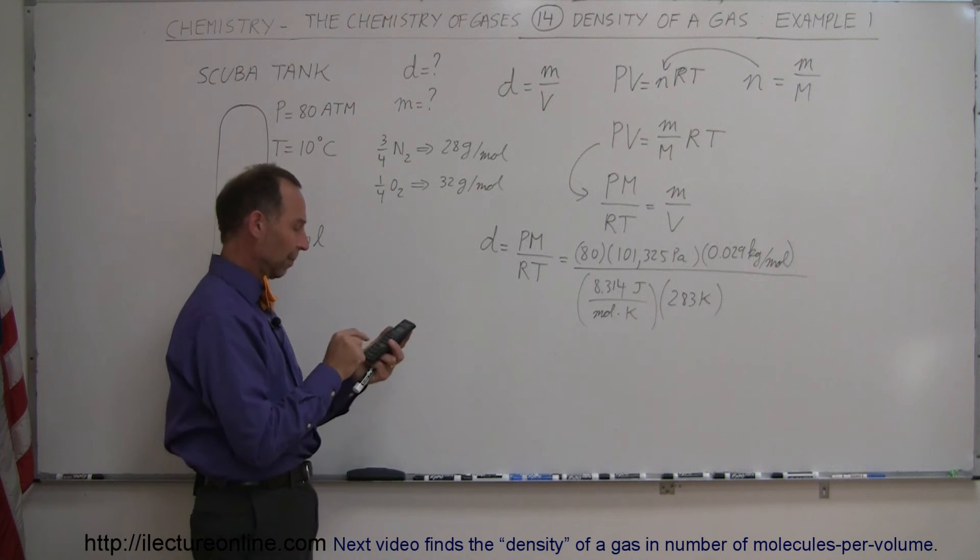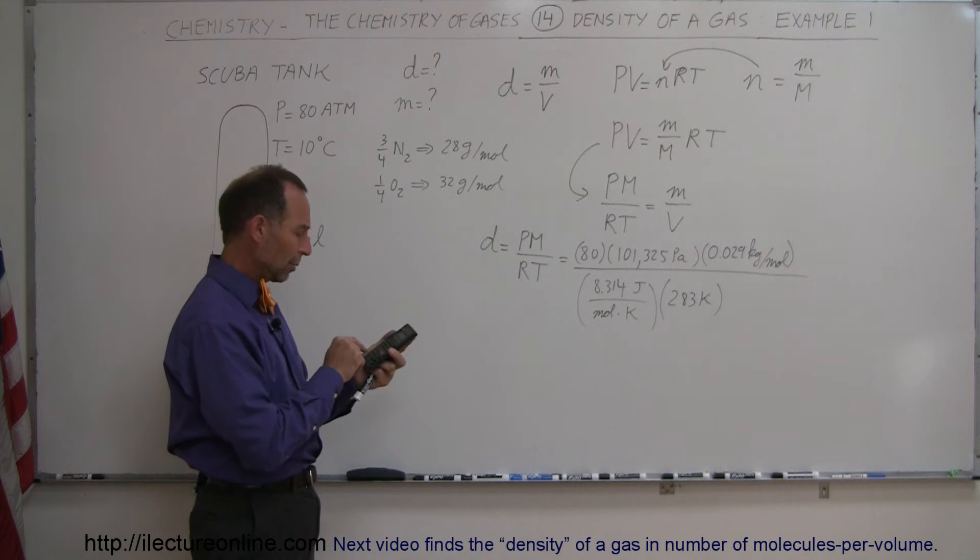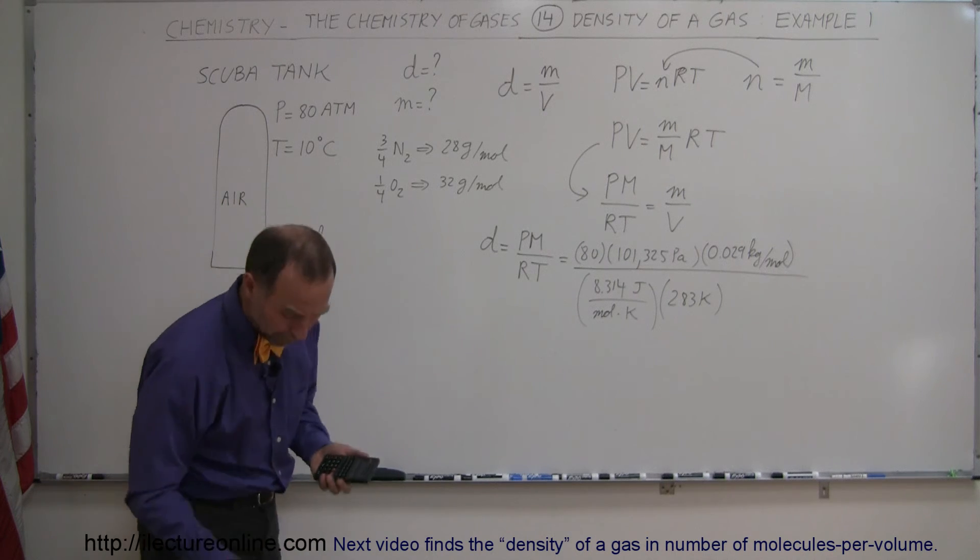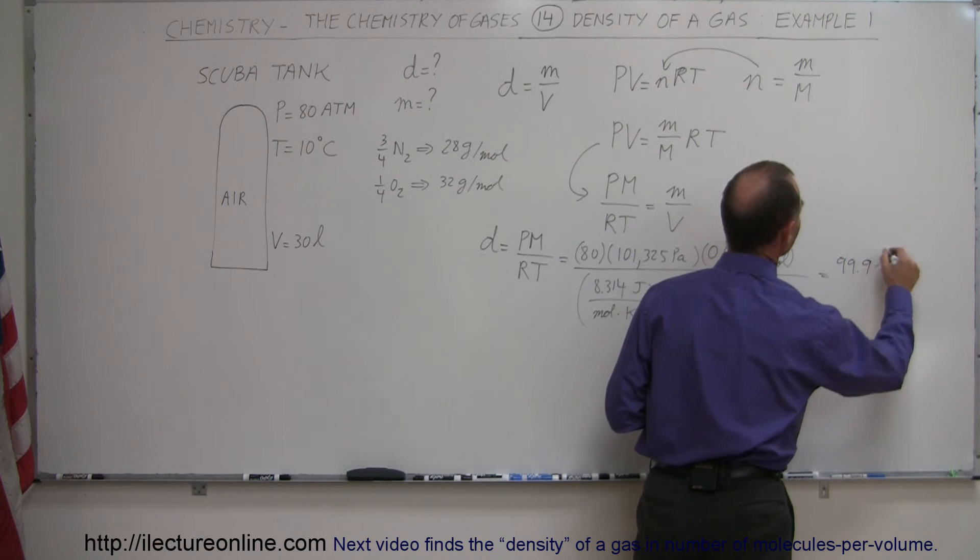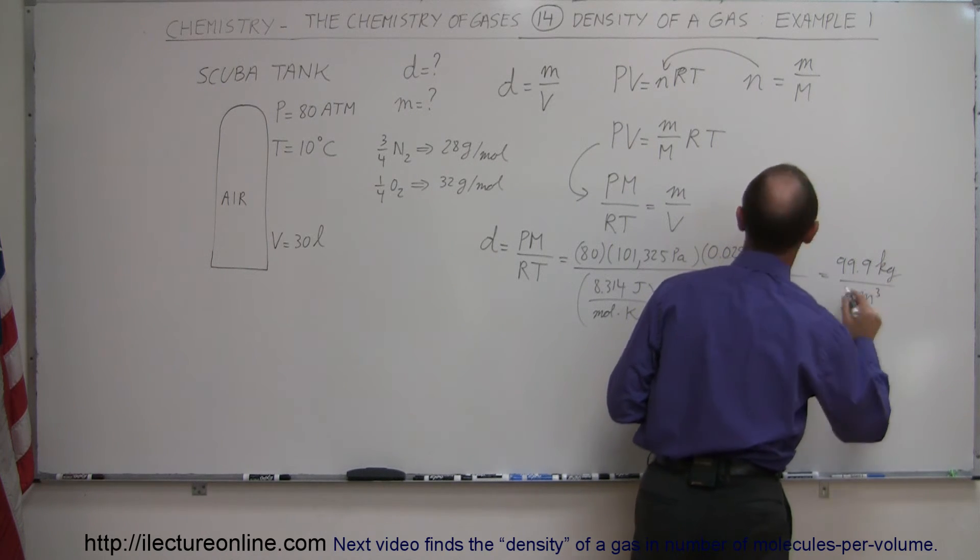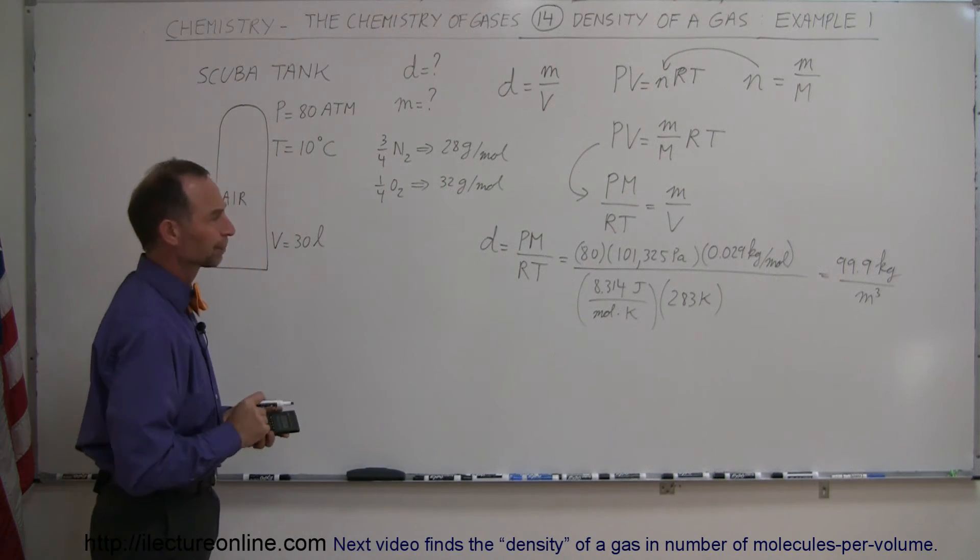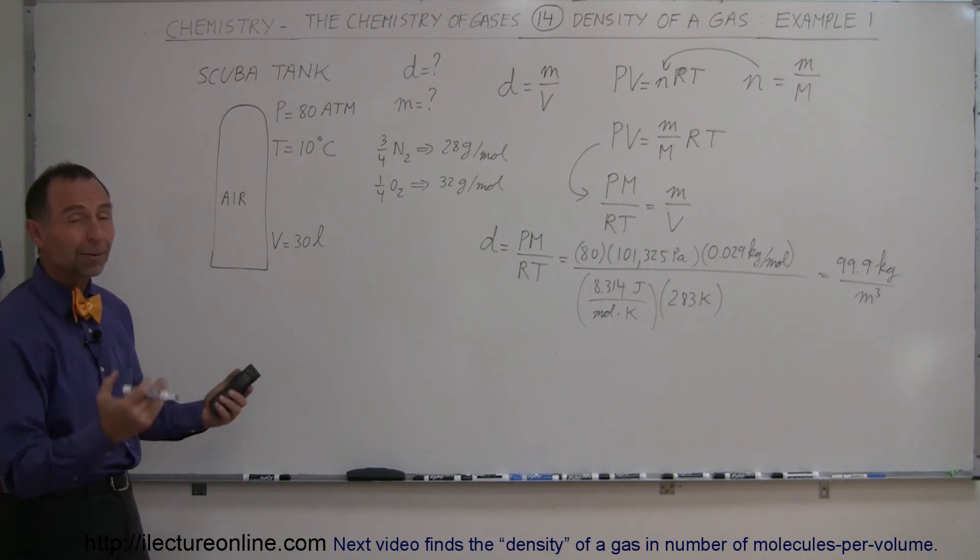And I was looking for my calculator here, so we got 80 times 101,325 times 0.029 divided by 8.314 and divide by 283 equals and looks like 99.9. Oh not moles but kilograms, 99.9 kilograms per cubic meter because we're using the standard equation for density. So if this was a cubic meter you would have 99.9 kilograms, that's over 200 pounds of air packed in there.